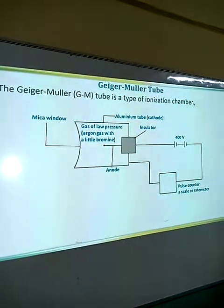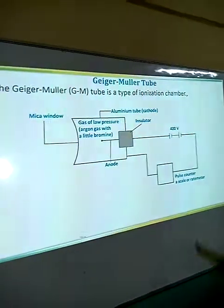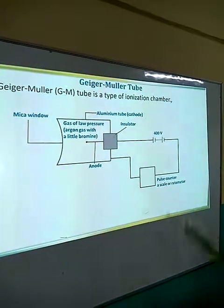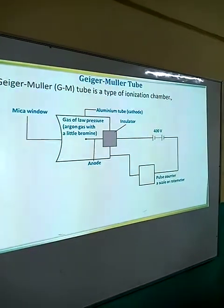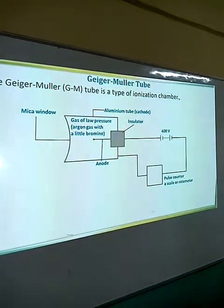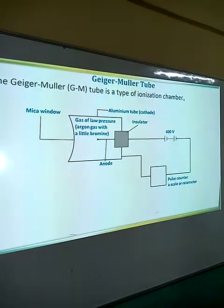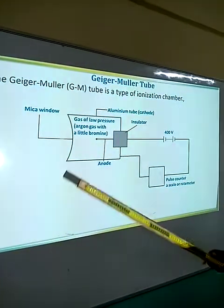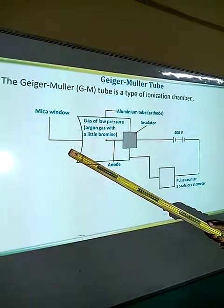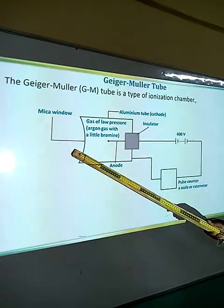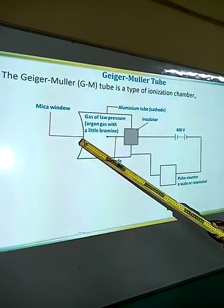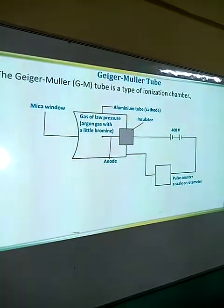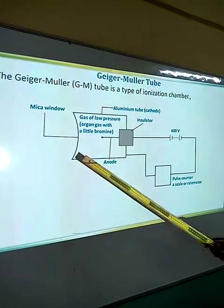Then there is a pulse counter, scalar, or sometimes called a rate meter — so it has three names. A radioactive material or particle is introduced through this mica window. The mica window is normally thin to allow the passage of that radioactive material.